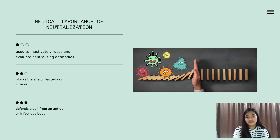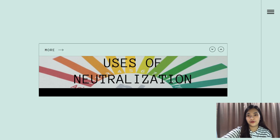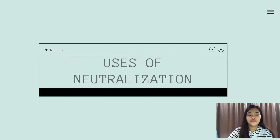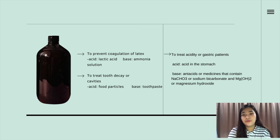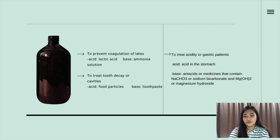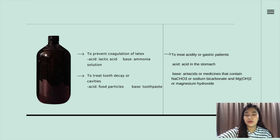Neutralization can also be used in different situations, and our group prepared examples related to our future profession. First is to prevent coagulation of latex. In the rubber industry, ammonia solution is used to prevent the coagulation of latex because ammonia solution can neutralize the acid produced by bacteria, which is the lactic acid.